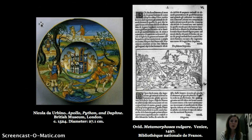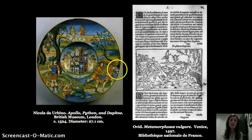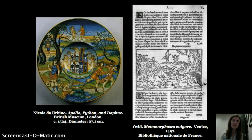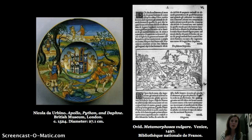Here we have the story of Apollo, Python, and Daphne. Apollo is represented three times: once with Cupid, because he's going to fall in love with Daphne; once with Python, who he's defeating; and once chasing Daphne, who he's in love with. Daphne is crying out to her father to save her from Apollo's advances, and she's turning into a laurel tree, which will become Apollo's favorite tree. This dish also features the coat of arms of Isabella d'Este, marking it as her own, along with some of Isabella d'Este's emblems — how she would mark her possessions and spaces within the palace.